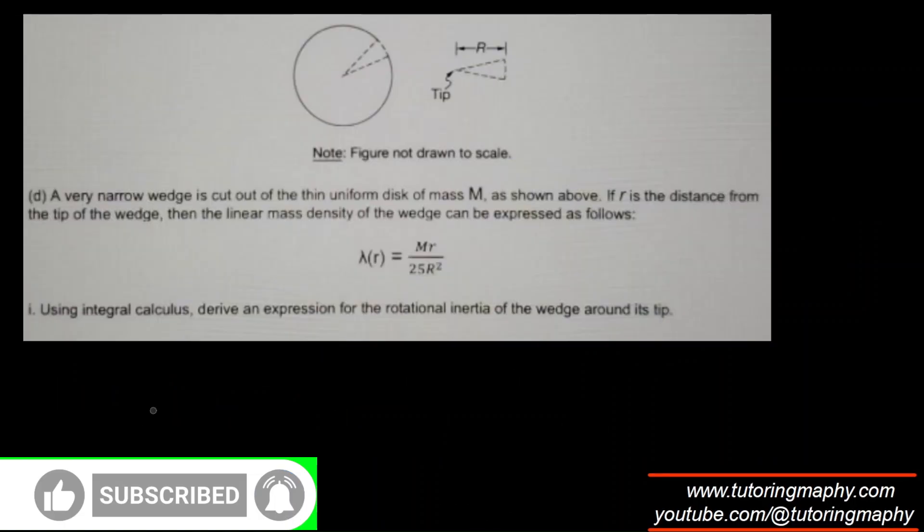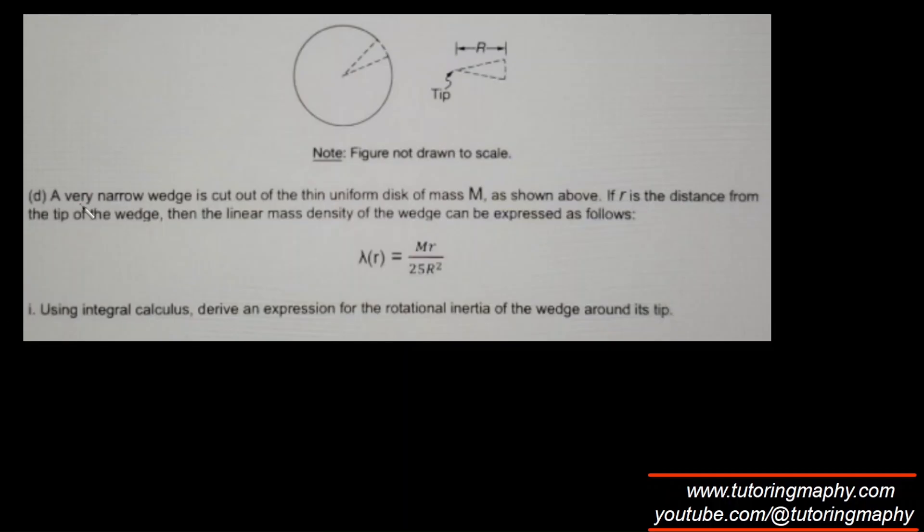Are we done? Oh yeah, no there's more. OK. Now this is a typical AP Physics C because it involves integration and all. A very narrow wedge is cut out from a thin uniform disk of mass M. So a wedge is cut. Its linear mass density is given as MR over 25 R square, where R is the distance from this tip towards the wedge. They are asking us to use integration to derive an expression for the moment of inertia of the wedge about the tip.